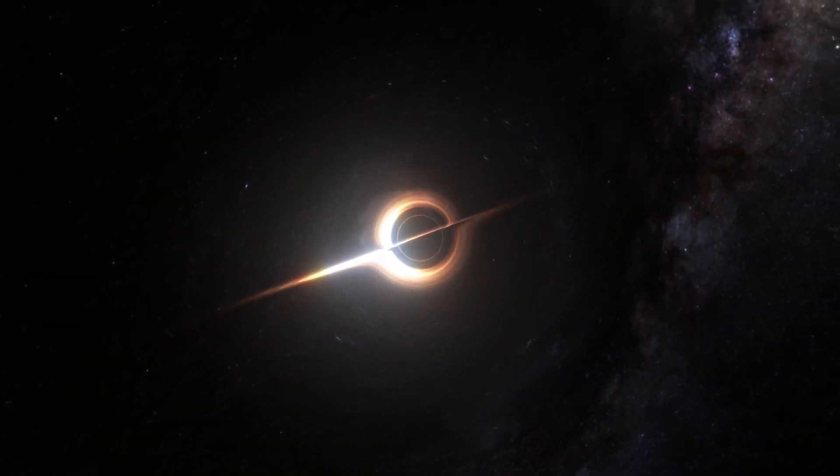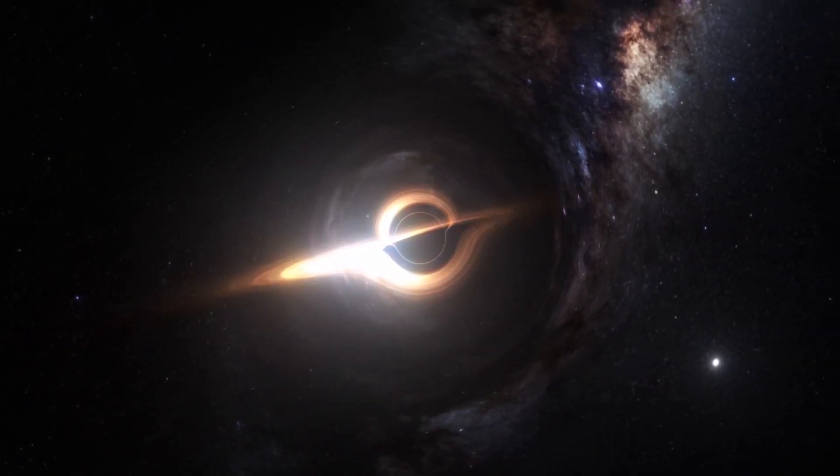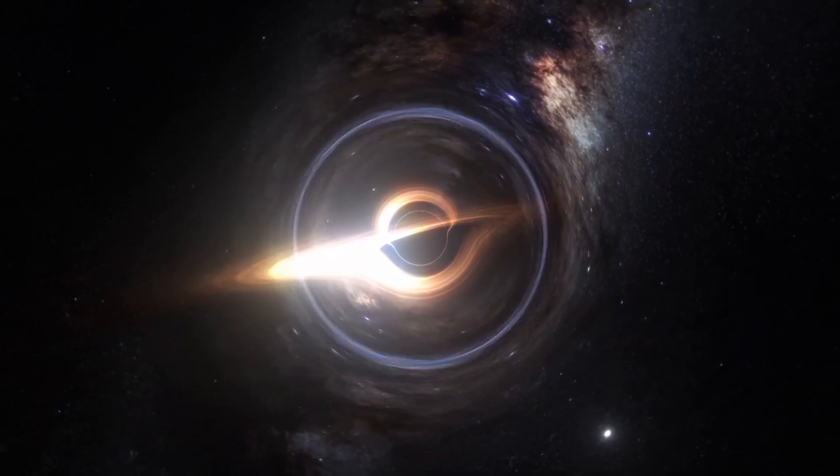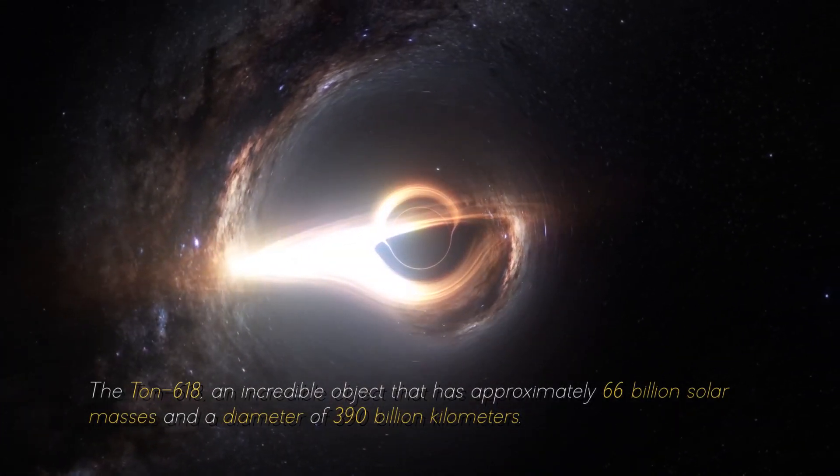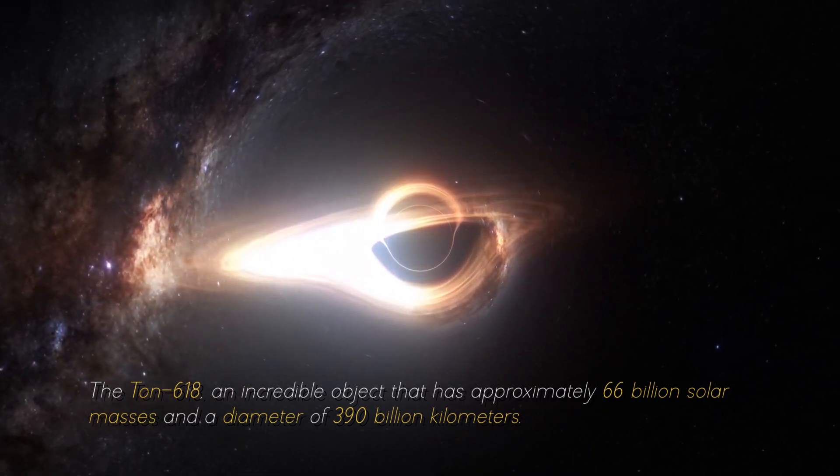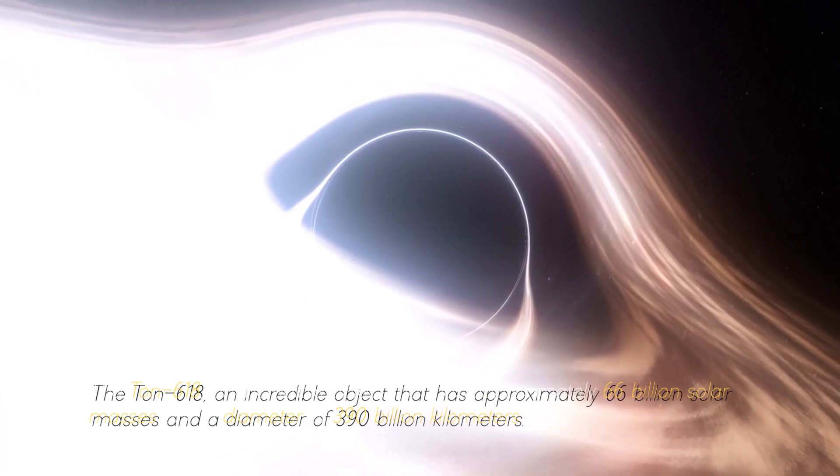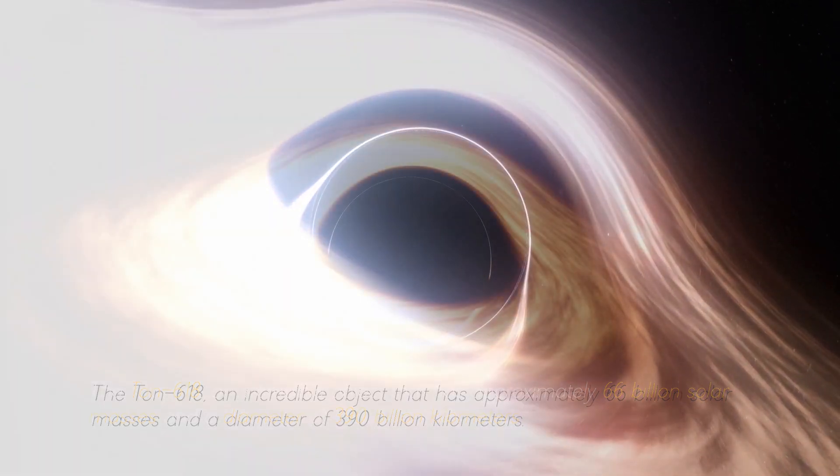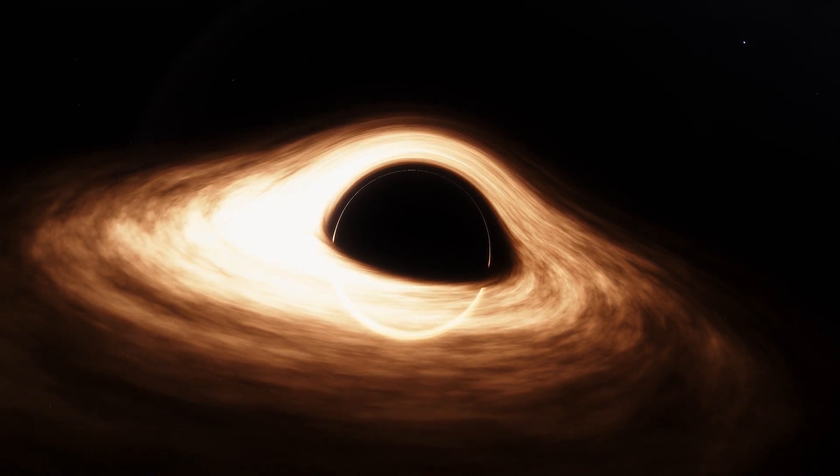Not everything ends here. This star cannot be compared with the most massive black hole in our cosmos, the Ton 618, an incredible object that has approximately 600 billion solar masses and a diameter of 390 billion kilometers. For now, we will stop measuring in kilometers and start measuring in light years.